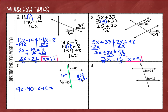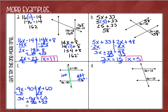I know that alternate exterior angles are equal to each other, so I'm going to write my equation as 4x minus 90 equals x plus 60. I'm going to subtract x from each side, leaving me with 3x minus 90 equals 60. Then I'll add 90 on each side, leaving me with 3x equals 150, and dividing each side by 3 gives me x equals 50.